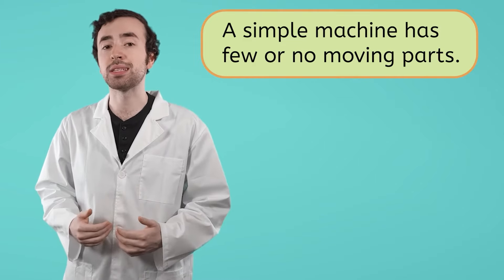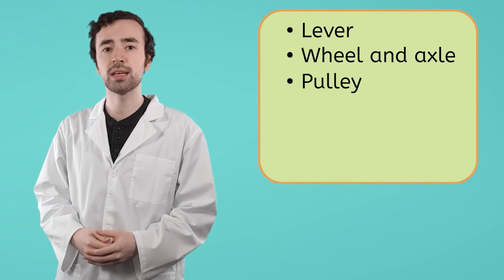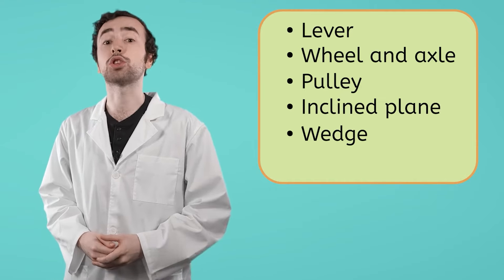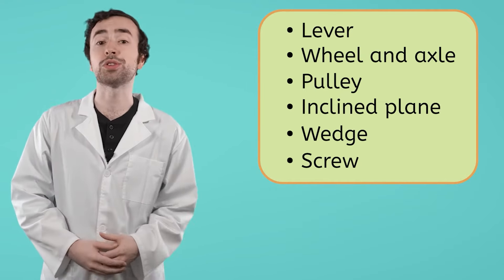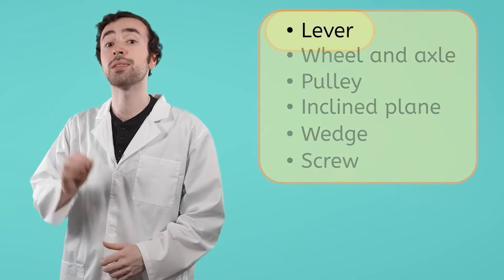For our purposes, there are six different types of simple machines. Levers, wheels and axles, pulleys, inclined planes, wedges, and screws. To get a better understanding of what simple machines are and what they do, let's take a closer look at that first type, levers.